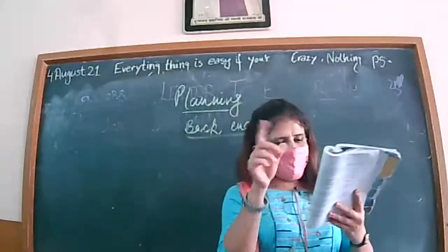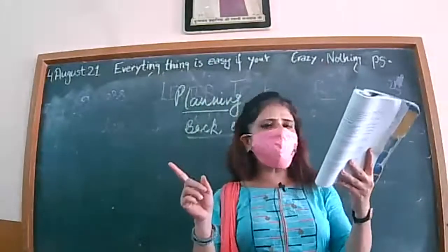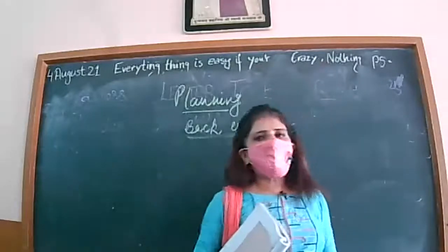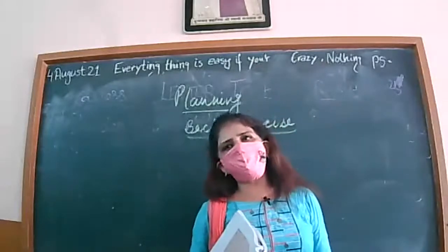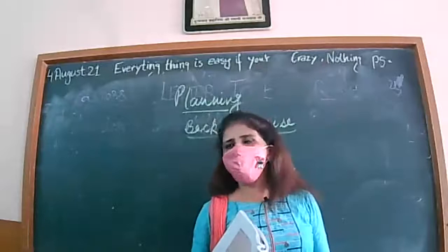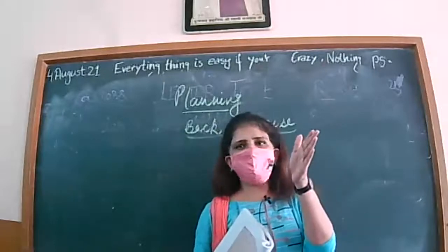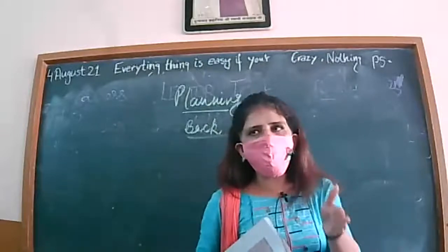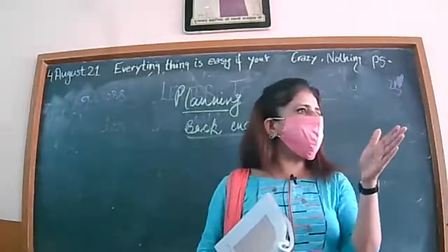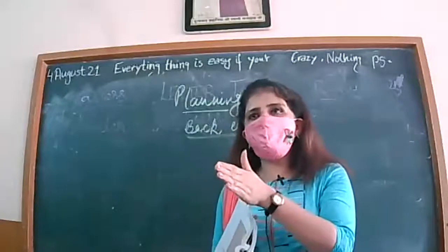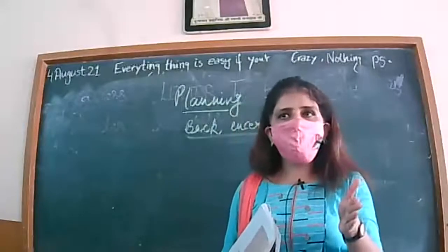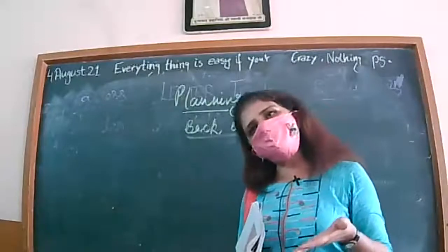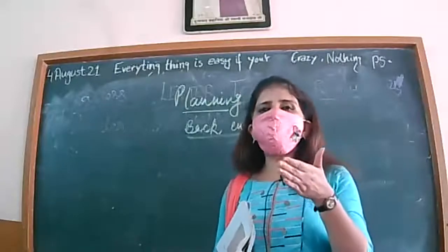How does planning provide direction? Under planning, we tell our employees how they have to move and what they have to do. Planning tells us what is to be done and how it is to be done. We give them instructions and tell them how the work is to be performed, giving direction so that goals can be effectively achieved.